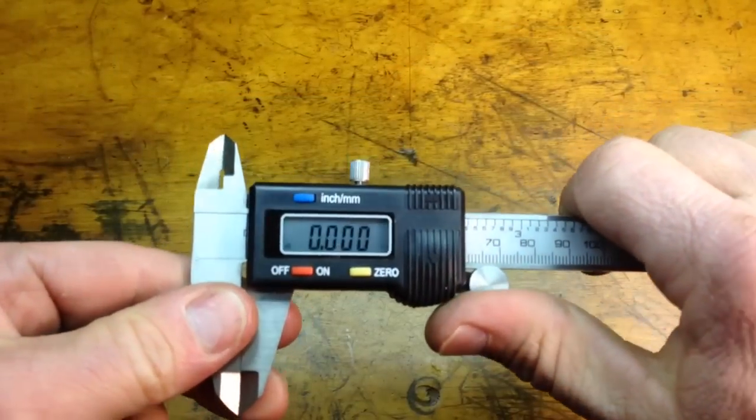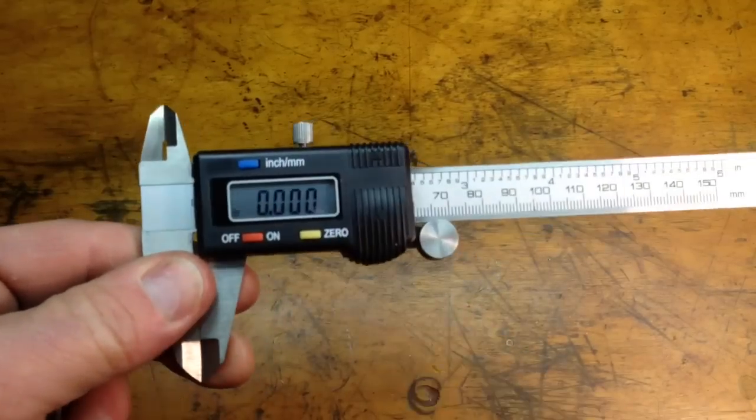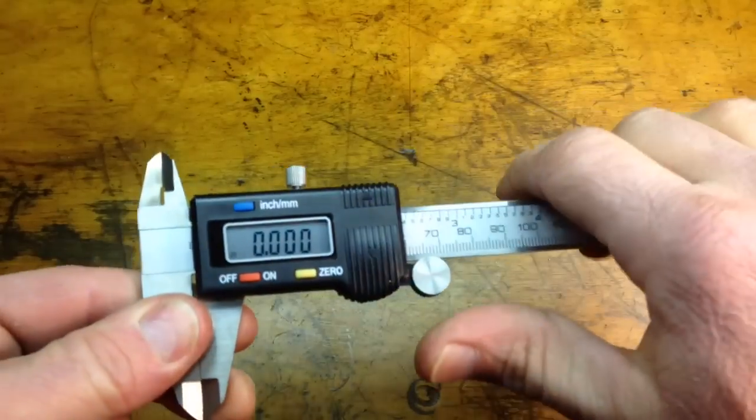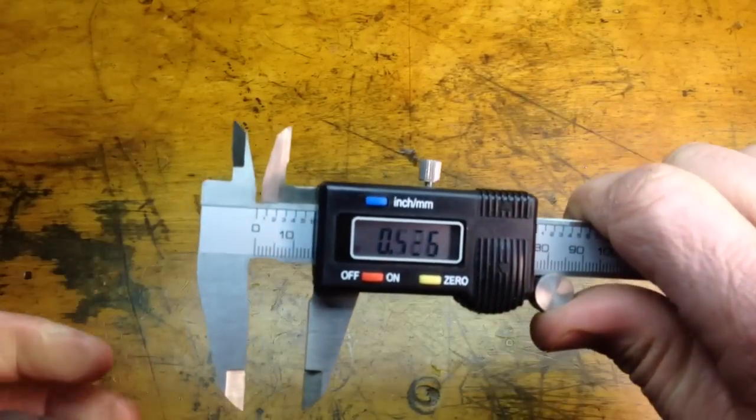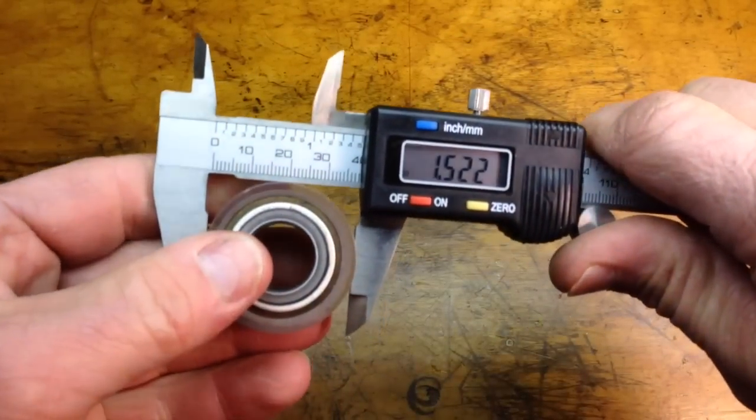Now we're going to take a look at the digital. Again, very much the same. It has a zero button. You can also read it in metric or standard English. It has a locking pin here, and it slides back and forth, very much like the other ones. So let's just take a look and see how easy this is to measure.